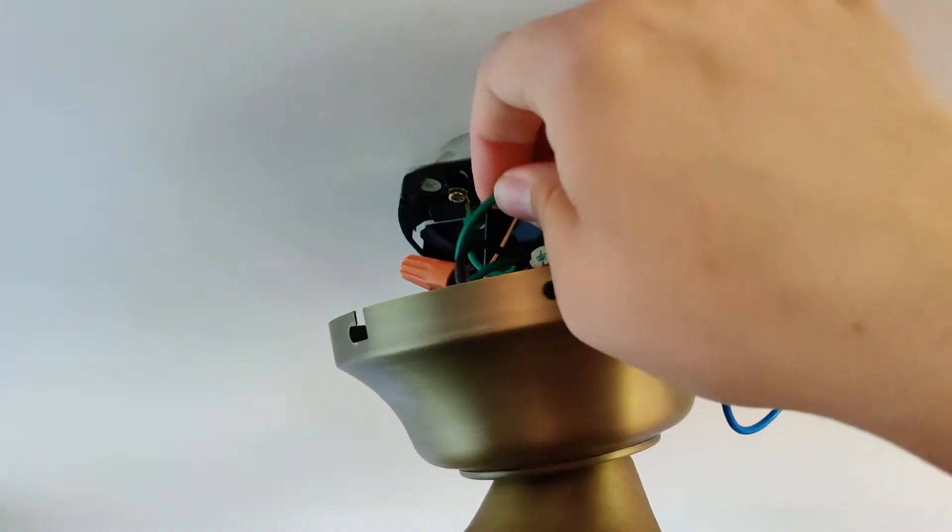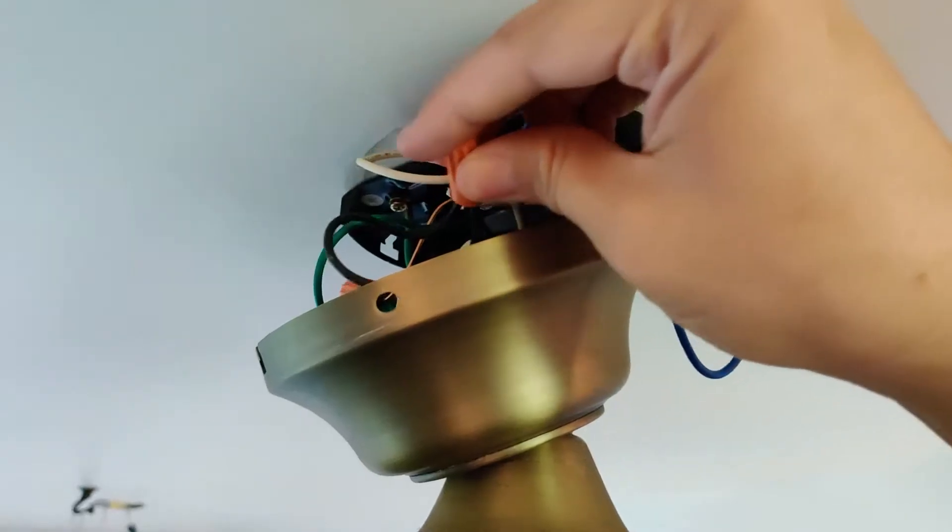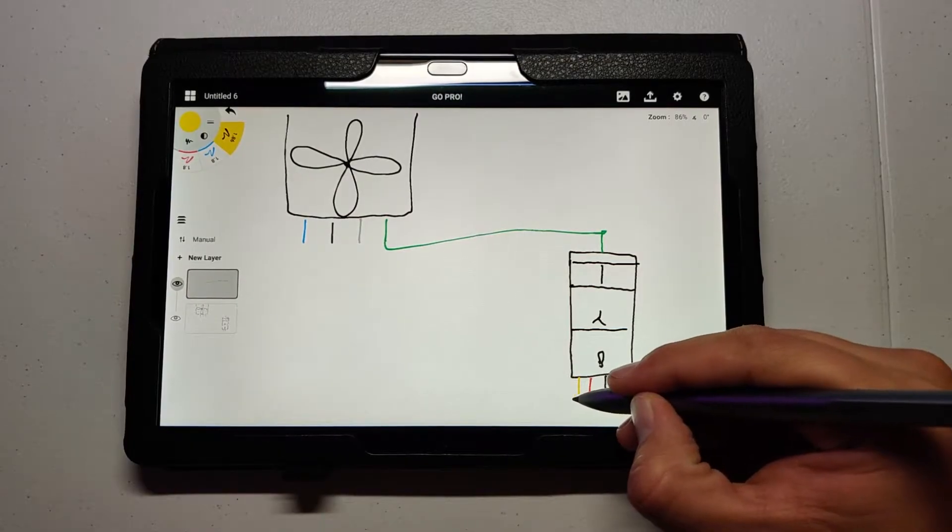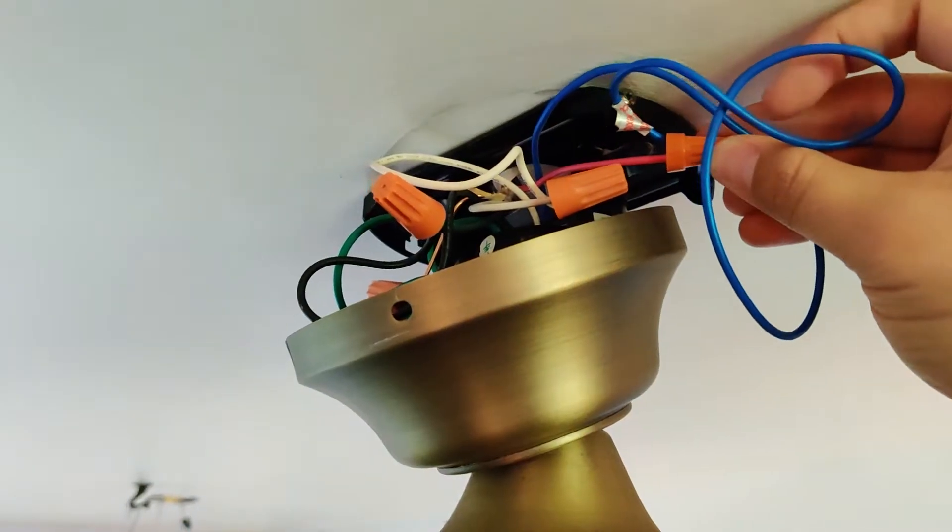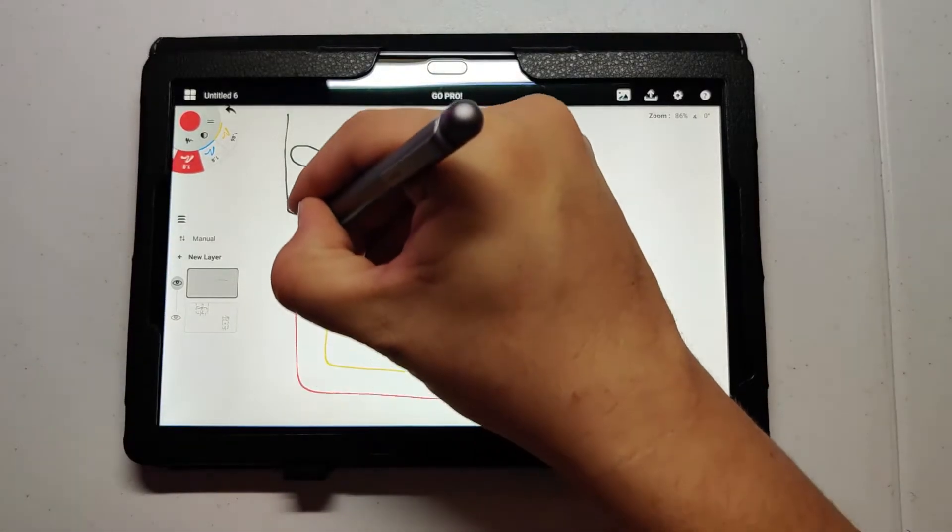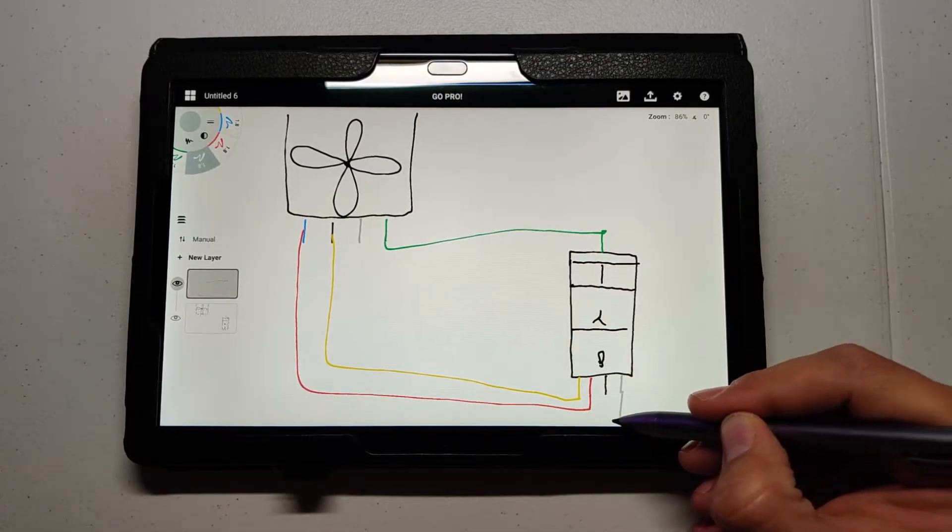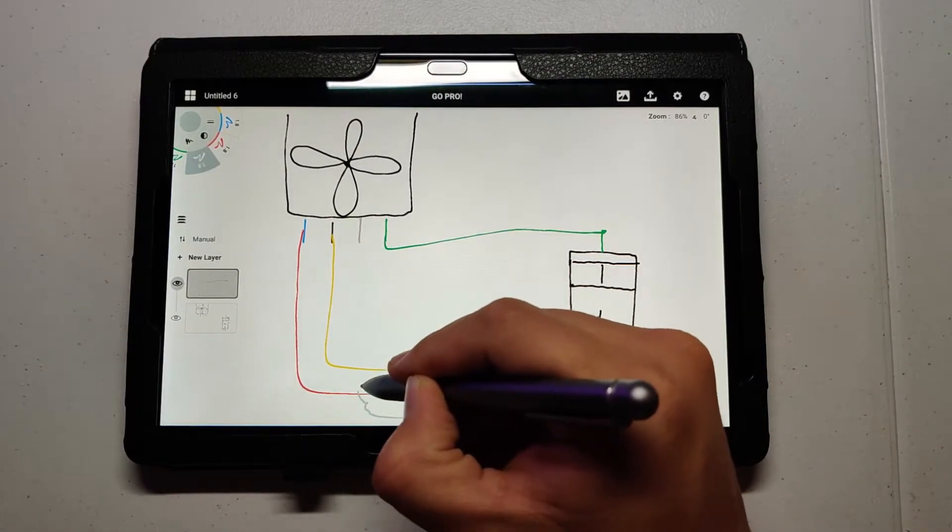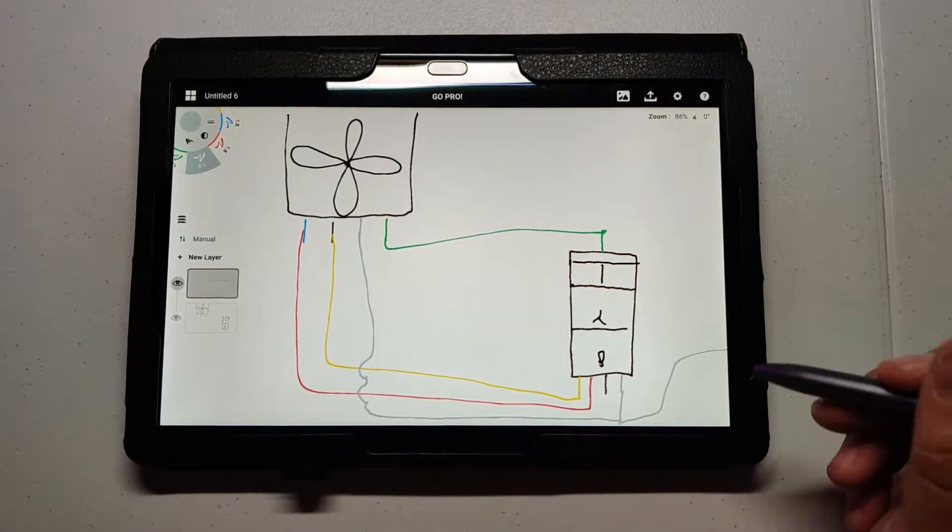So if your fan is set up like mine was which is typical for pull chain fans, there's only two conductors going to the fan. One for powering both the lights and fan and one neutral. If you want to do this switch you're going to need to have three conductors going there. One separate one for the lights and then one for the fan and then the neutral. You may need to run some three conductor wire. Once I did that I was able to wire it as I've shown here.